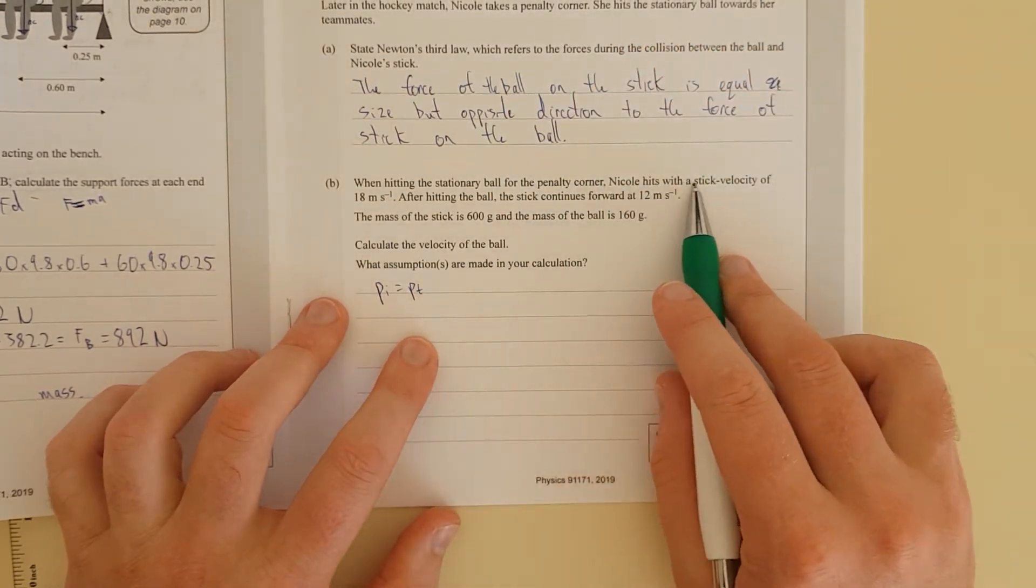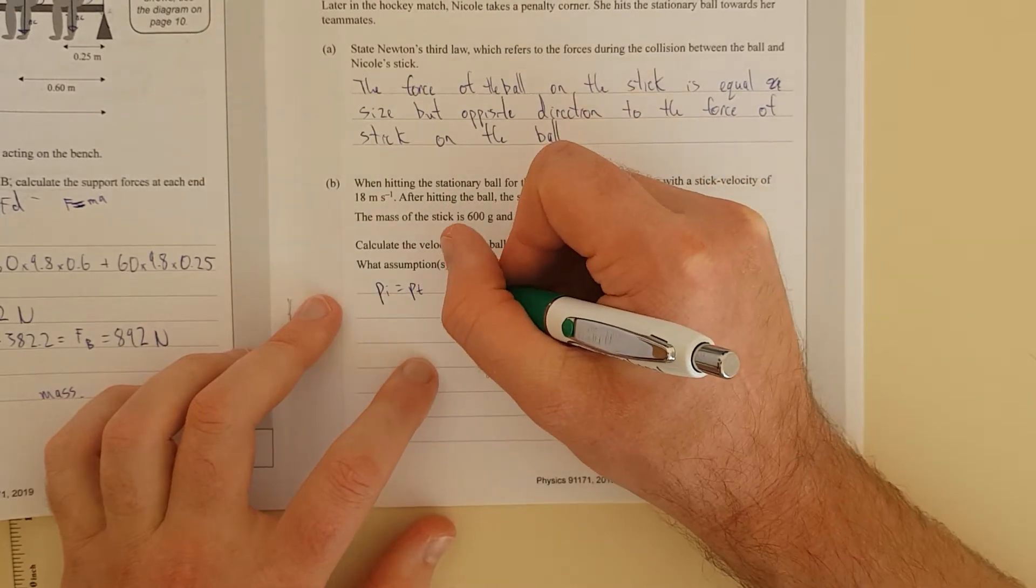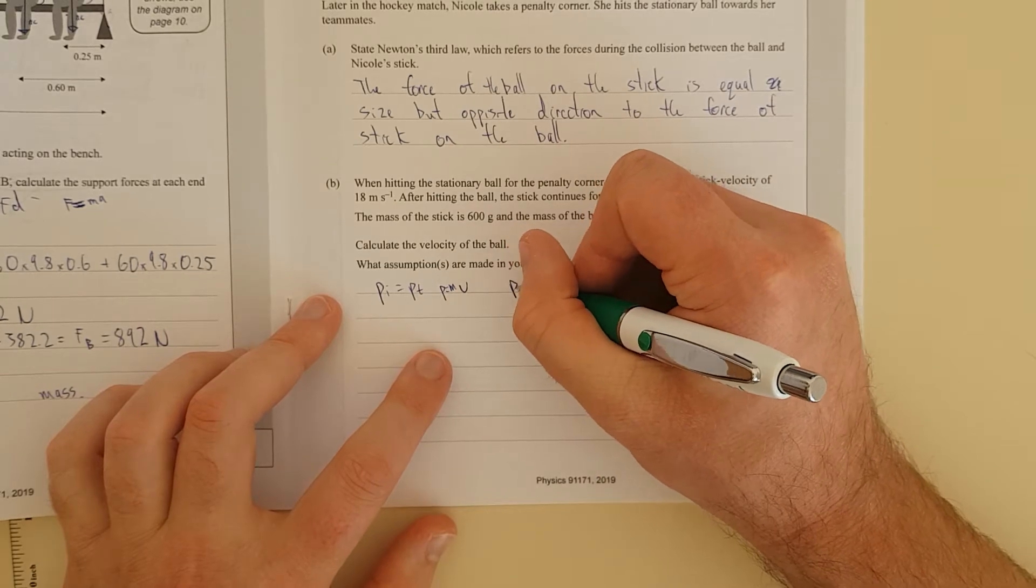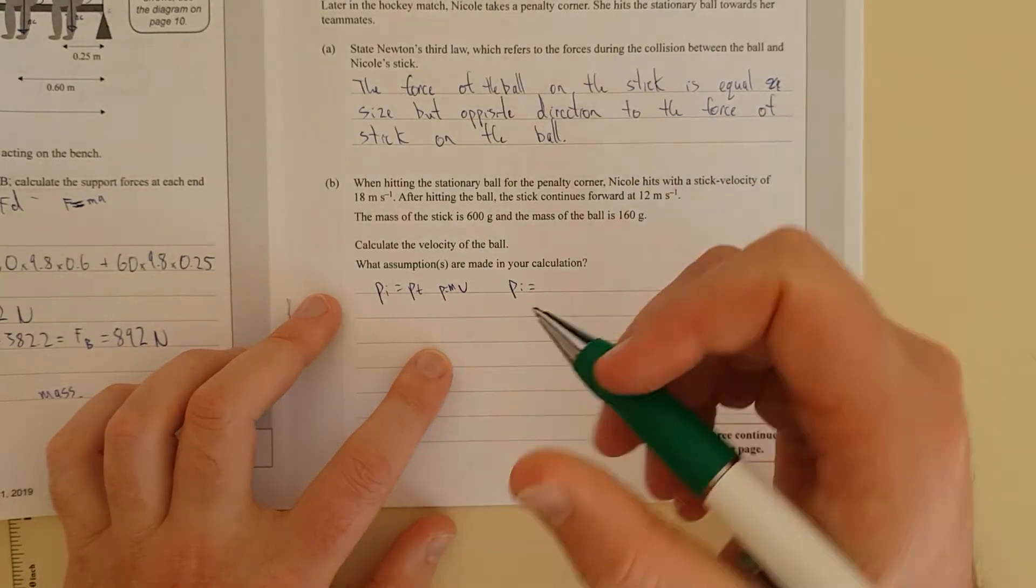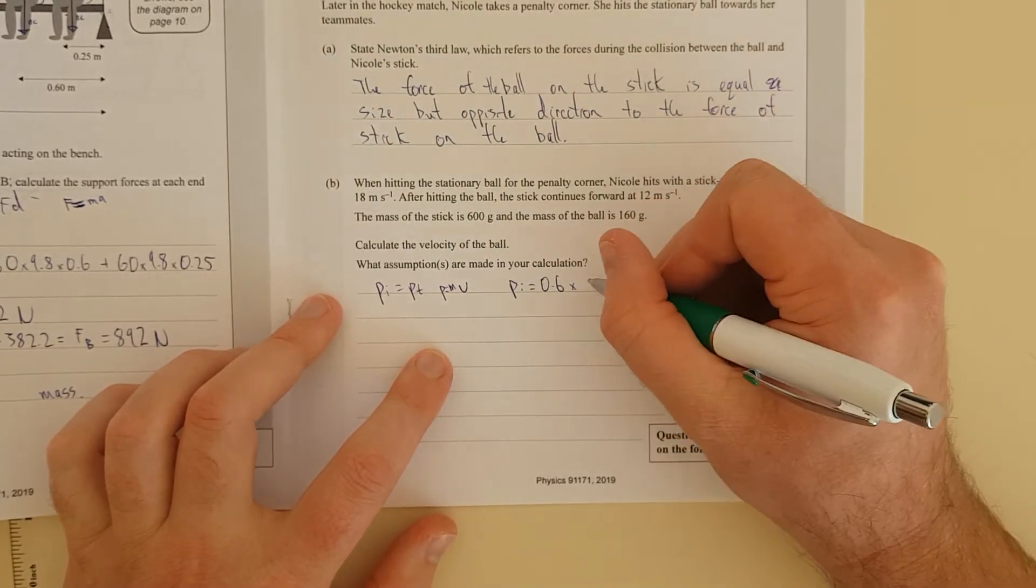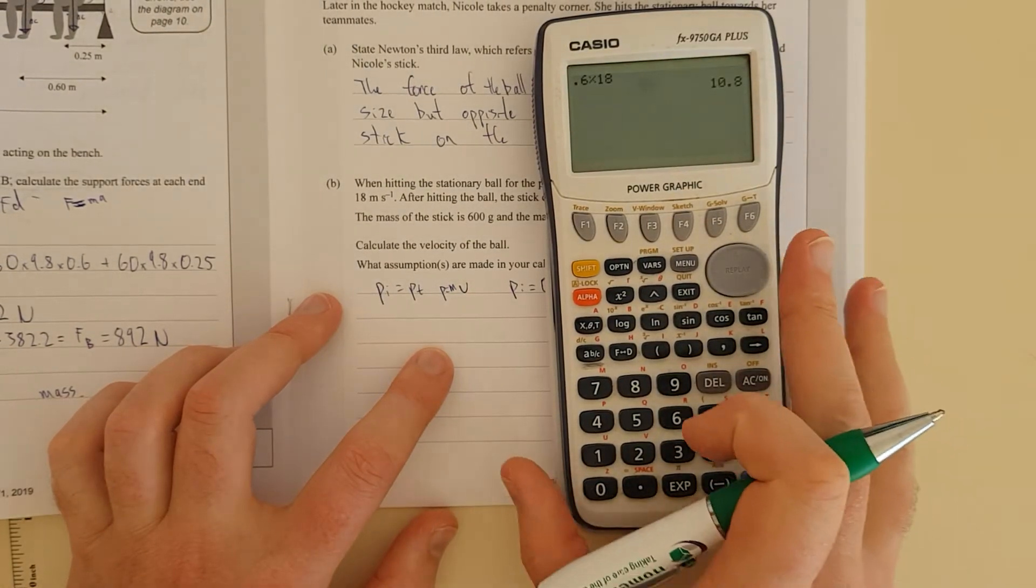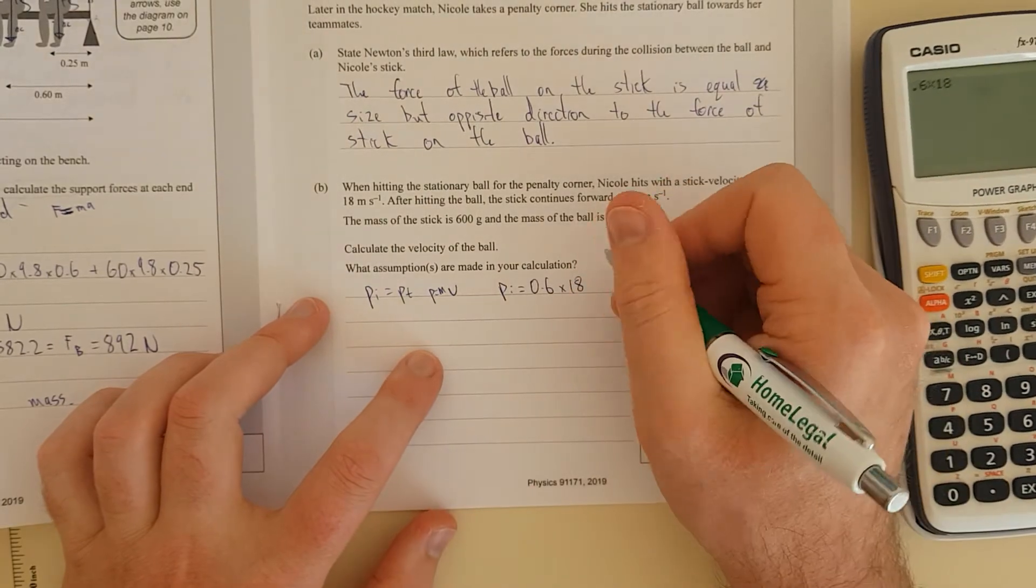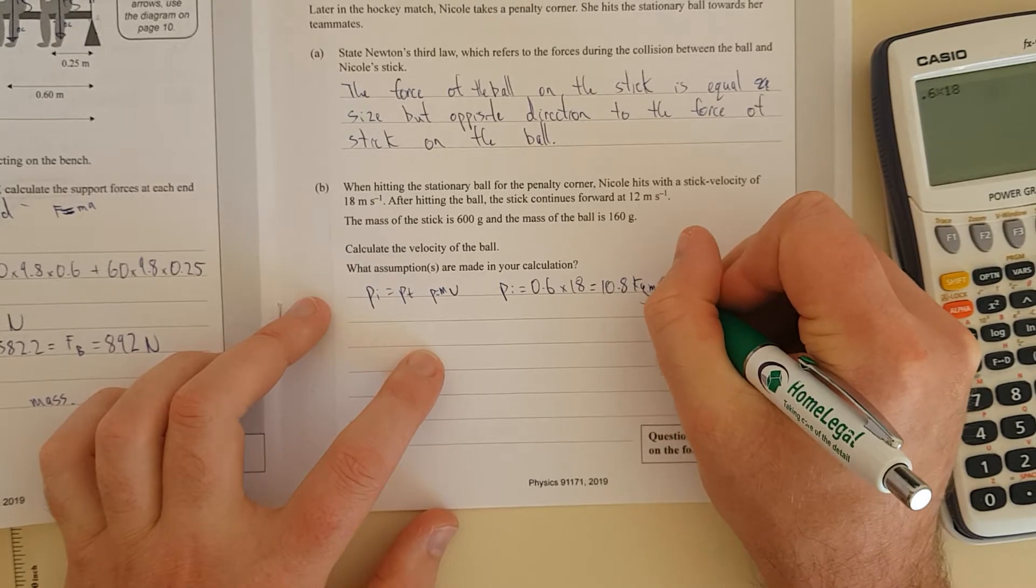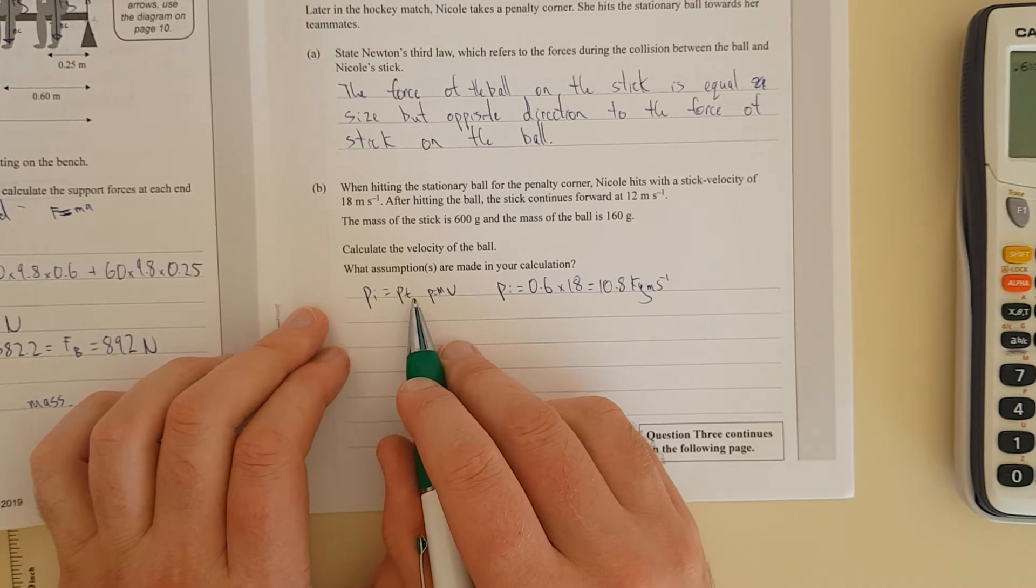Right, so the initial momentum is 18 meters per second. So momentum, let's write the formula here. Momentum, P equals MV. So PI is equal to the mass of the stick, which is 0.6 kilograms times the velocity of the stick, which is 18, 18 meters per second. And we can see it gives me an answer of 10.8 kg meters per second, because it's mass times the velocity. So that's the initial momentum, and we can see here it equals the final momentum.